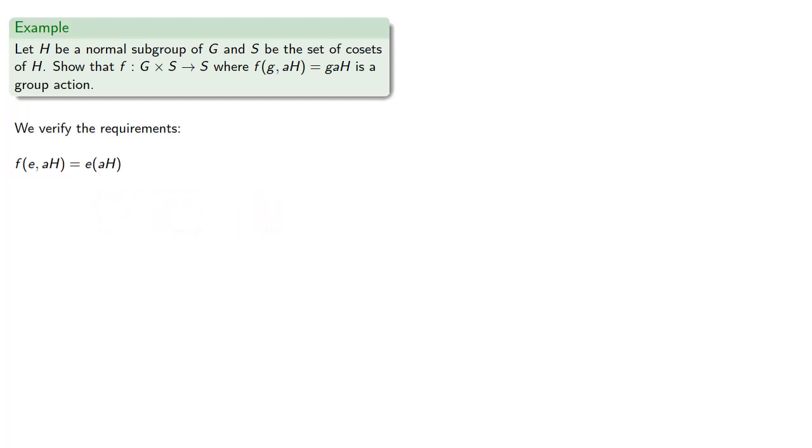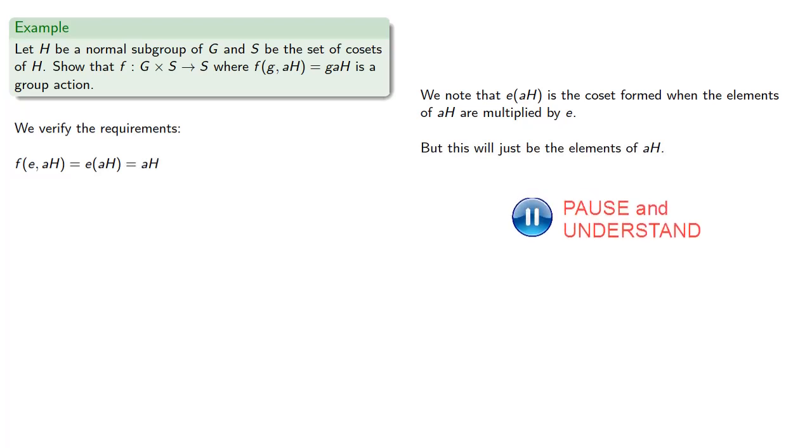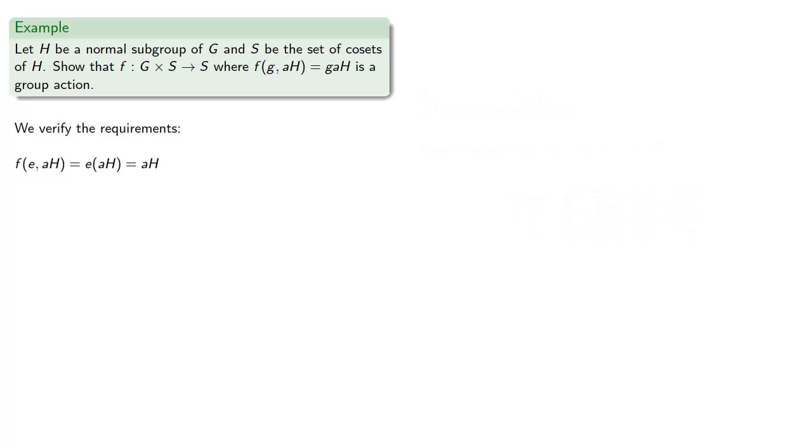Well, we know that E applied to AH, that's just a coset formed when the elements of AH are multiplied by E. But remember, these are the identity and group elements, and so when we multiply an element by E, we just get the elements of AH.